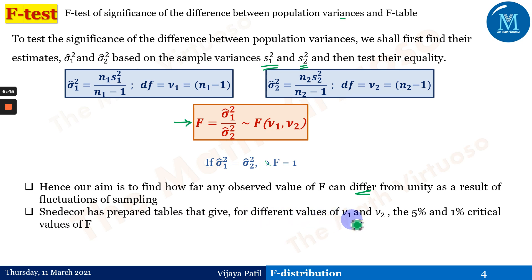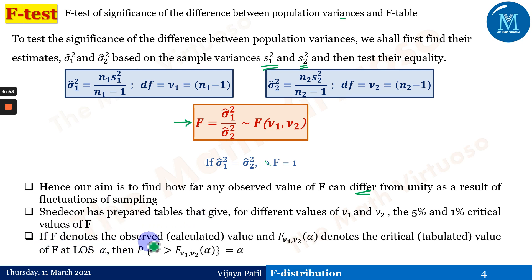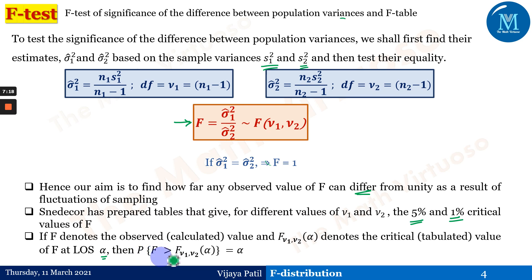The F-table gives critical values for different values of ν₁ and ν₂. The observed or calculated value is denoted F, and the tabulated critical value at level of significance α is denoted F(ν₁, ν₂, α). So for the F-distribution we consider α at 5% or 1%. The probability P(F > F(ν₁, ν₂, α)) = α. Similar to the z-table or standard normal table, we have the F-table for 5% and 1% critical values.